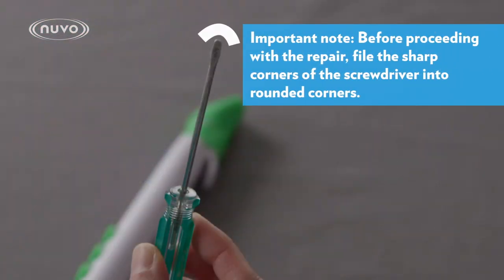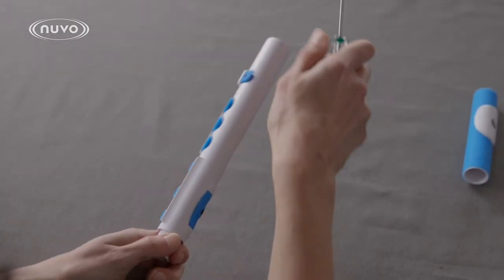You will need a dulled flathead screwdriver. Firmly grasp it where the head joint attaches.